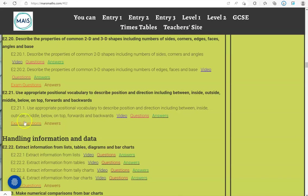In this video, we'll go through exam questions that cover the criteria: describe the properties of common 2D and 3D shapes, including numbers of sides, corners, edges, faces, angles, and base.